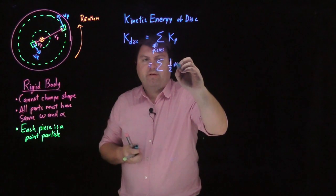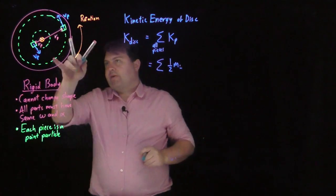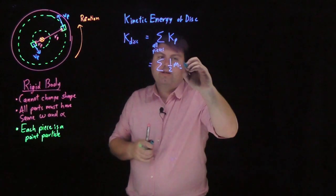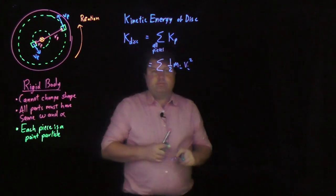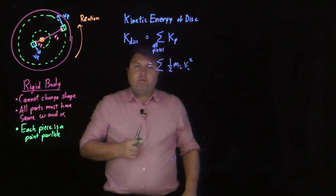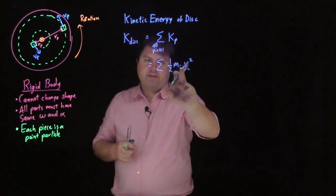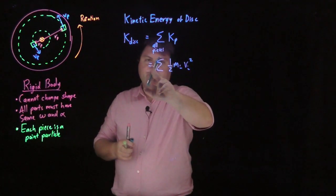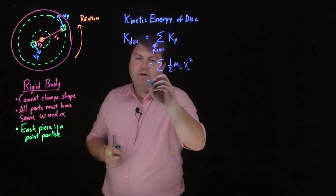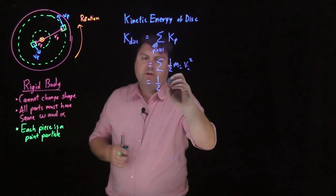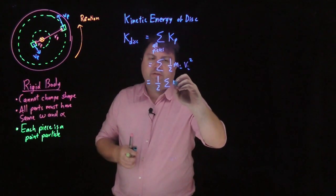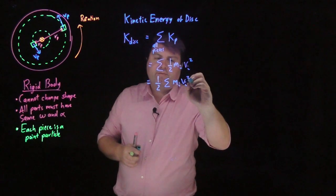So one-half the mass of each piece—each piece might have different masses—and then the velocity squared of each piece. So we can do one trick first: if we have this sum, the one-half, whether it's inside the sum or outside the sum, we can pull it out. So I have one-half the sum of m_i v_i squared.